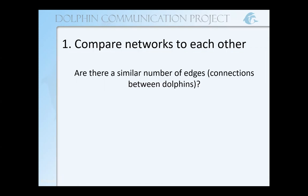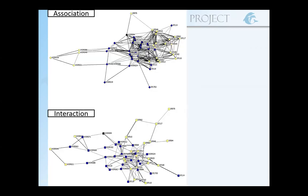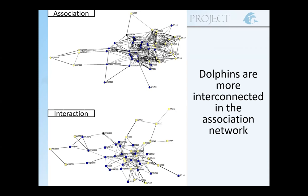There are a few things we can do when applying SNA to our dolphin group. The first is to compare those networks to each other — do they have a similar number of edges or connections? Here we're looking at our association network on top and our interaction network, where individuals with a similar number of associates or interaction partners are plotted more closely together and more centrally. Females are yellow, males are blue. You can see that dolphins are more interconnected in the association network. The association network has 794 edges, whereas the interaction network only has 274.